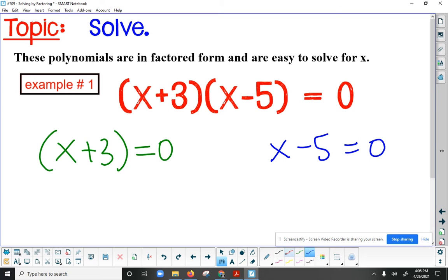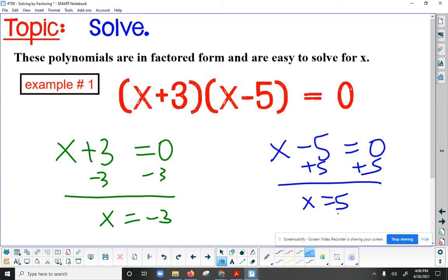I'm going to use some inverse operations here. And I actually don't need these parentheses because there's nothing to multiply. So if I subtract three, then the answer would be negative three. But on this second sentence, the answer would be positive five, which I already kind of figured out earlier, right? So the solutions are that x can be negative three, or it can be positive five.